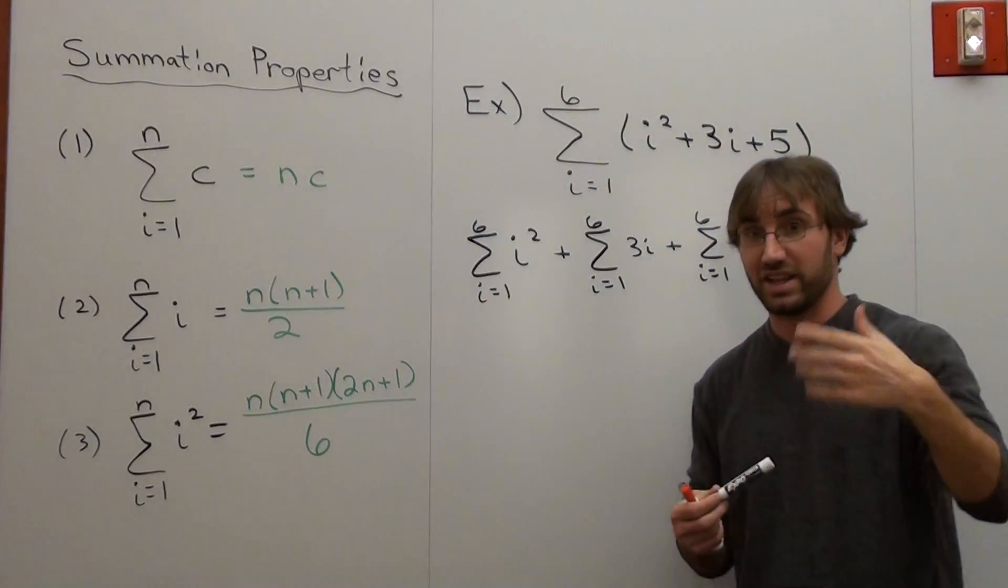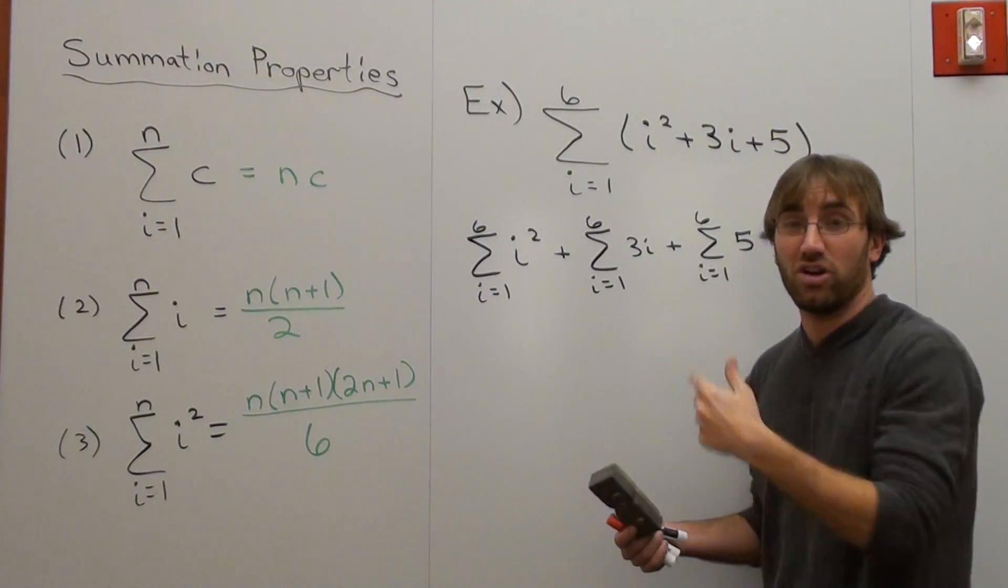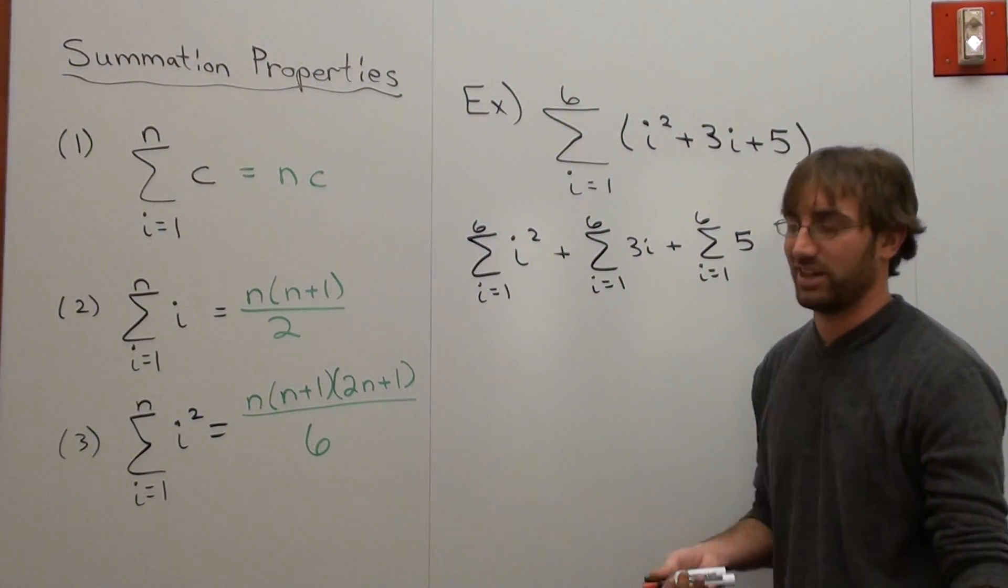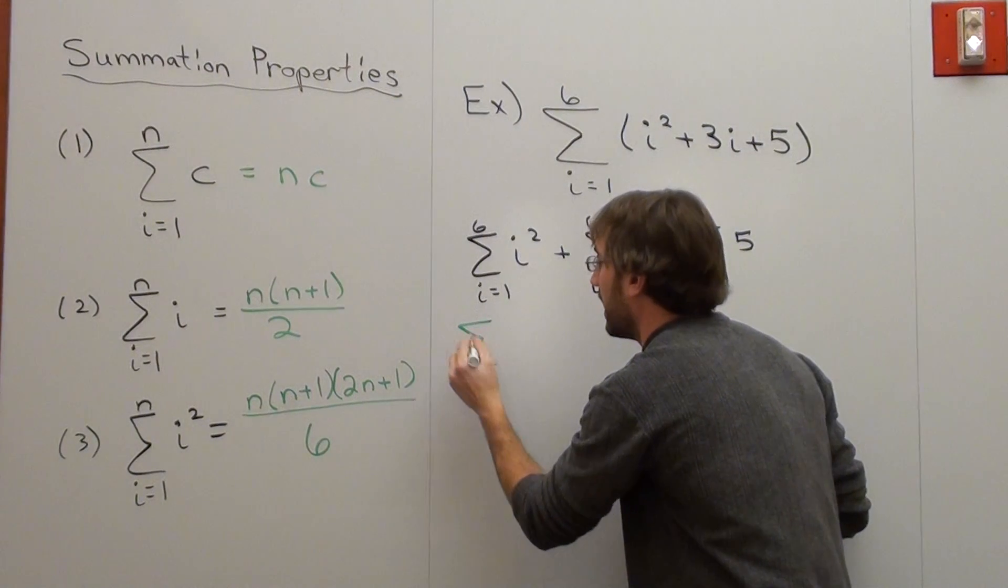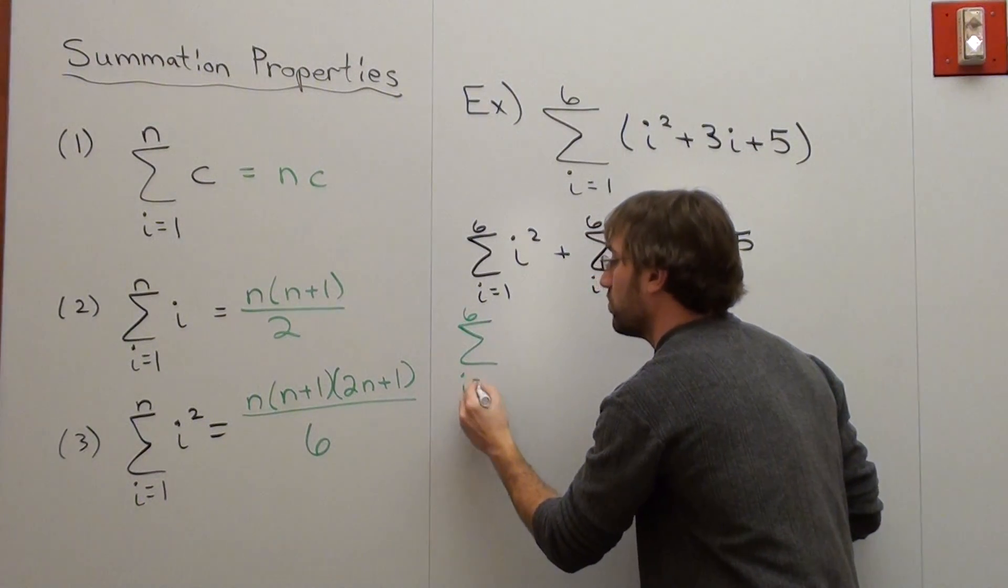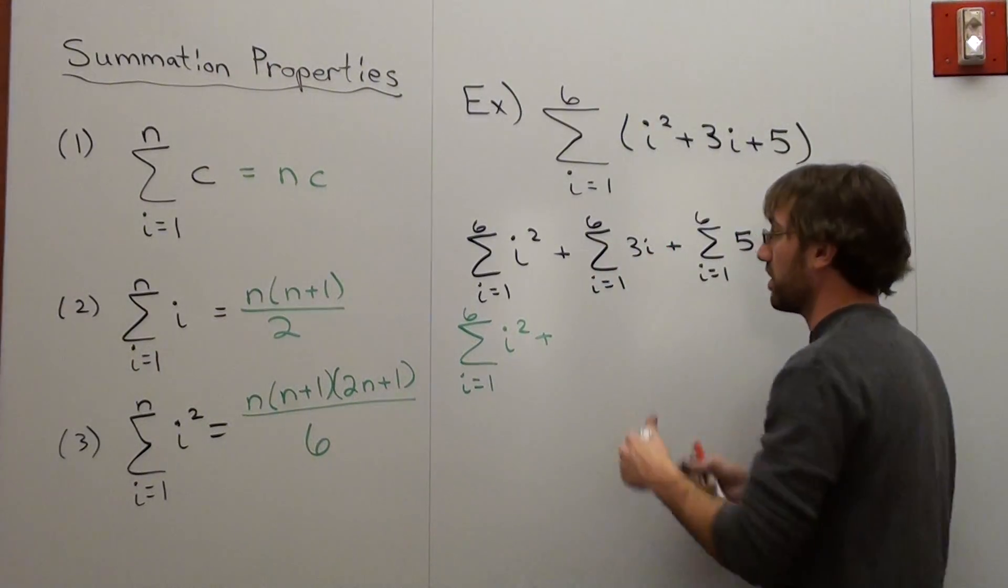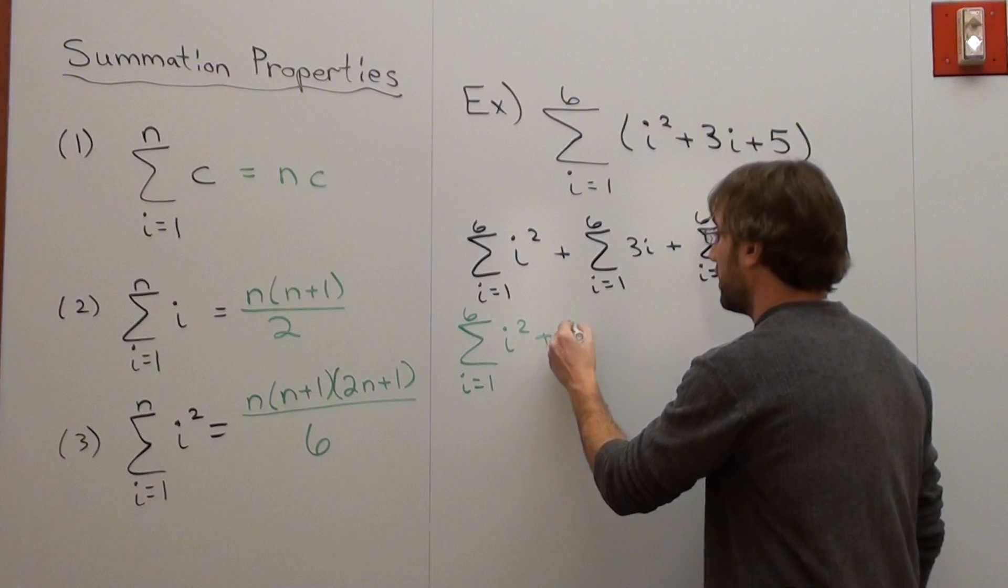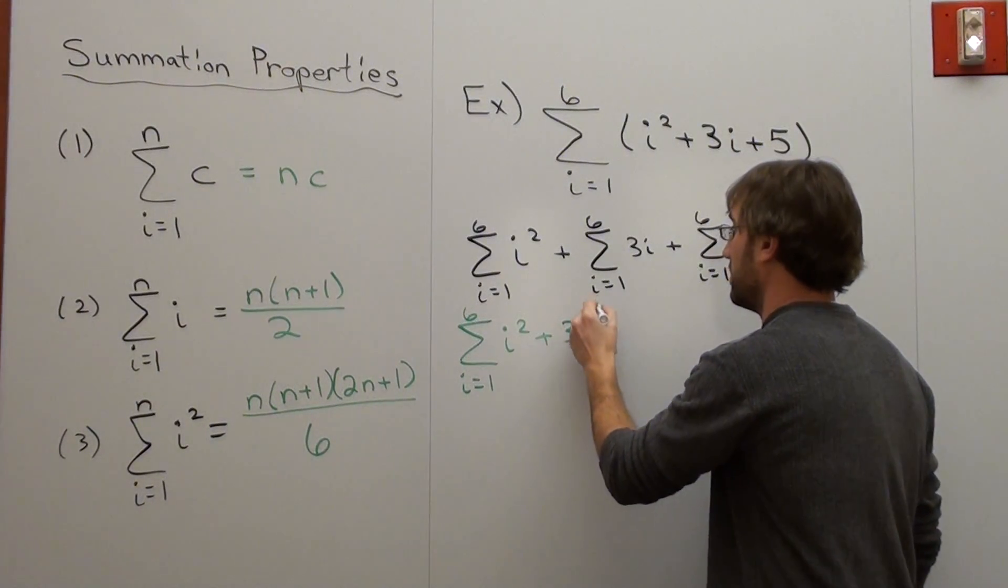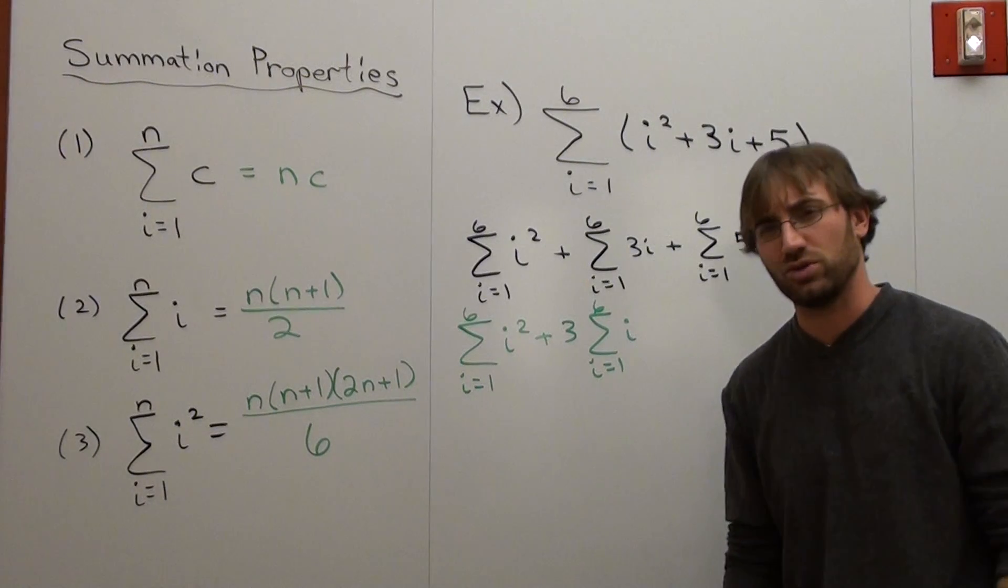I'm going to go ahead and take this step. Since I've got a number in front of the i, all I really have to do is just pull it out. Actually, I'll write it again. What's the big deal? So if I do that, I've got summation from i equals 1 to 6 of i squared, plus the 3 goes out in front, because we're going to just be multiplying everything by whatever this answer is by 3. Summation from i equals 1 to 6 of i.